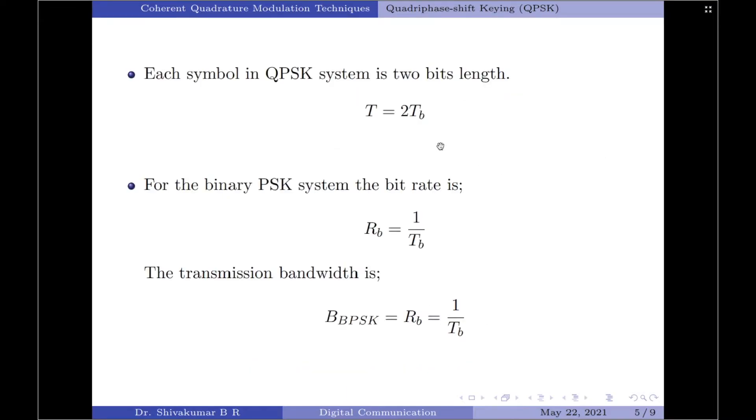Coming to the mathematical aspects, we should note that each symbol in the QPSK system is of two bits length. Therefore, the symbol duration of QPSK, which is capital T, is twice that of the bit duration Tb as in the case of a binary PSK system. So, T equals 2Tb.